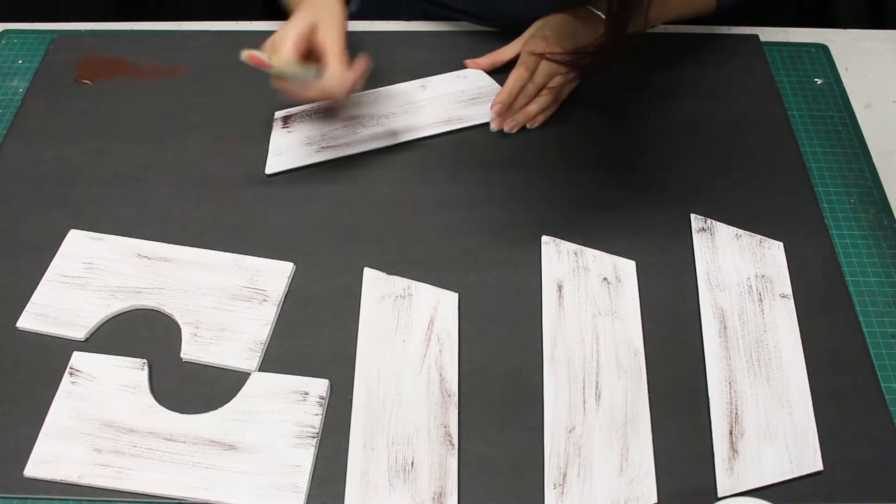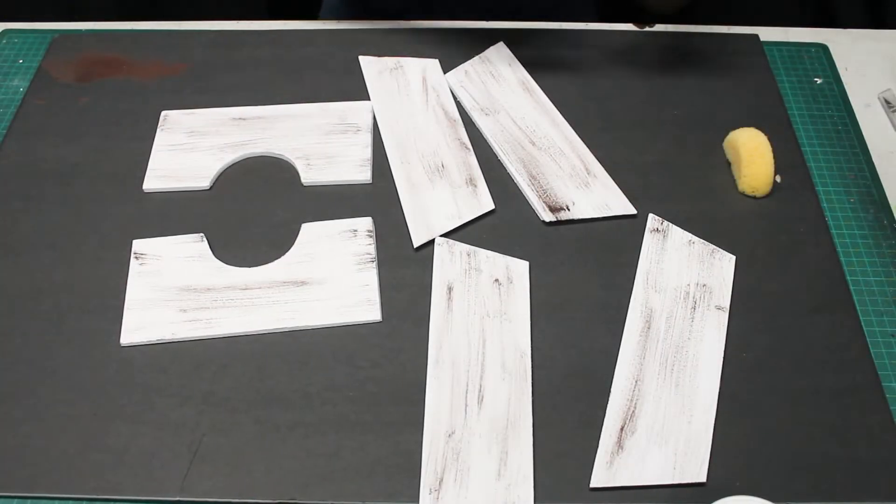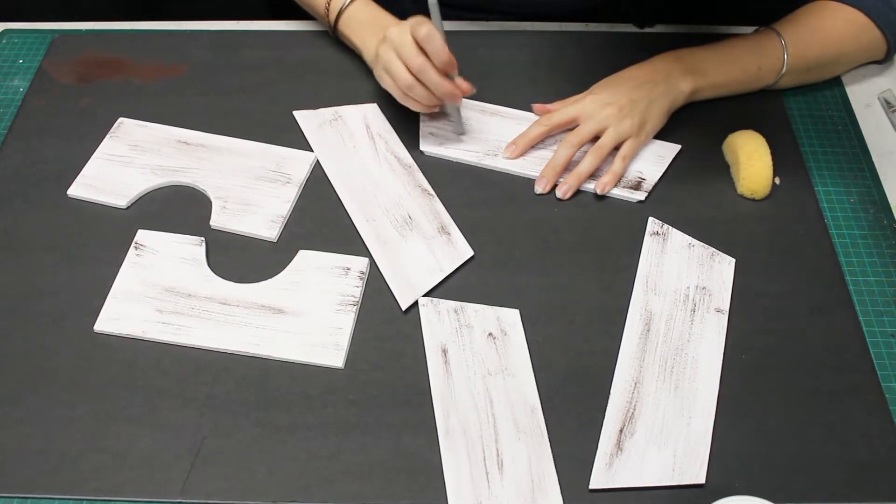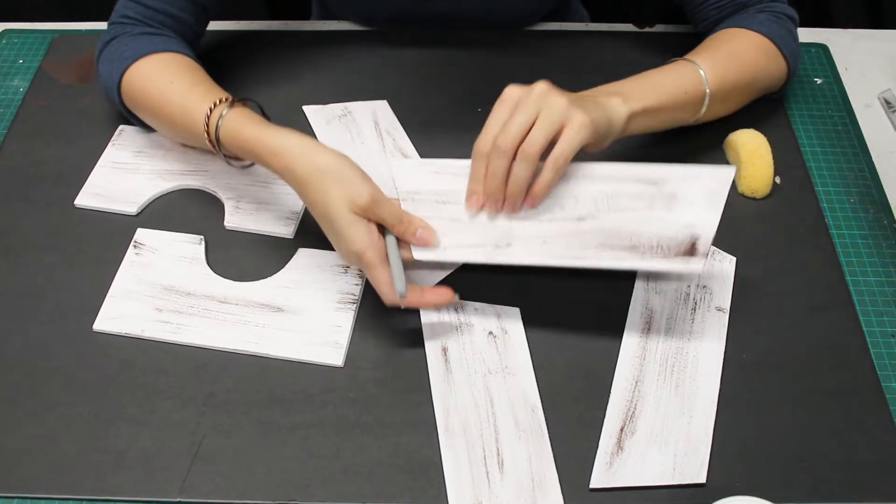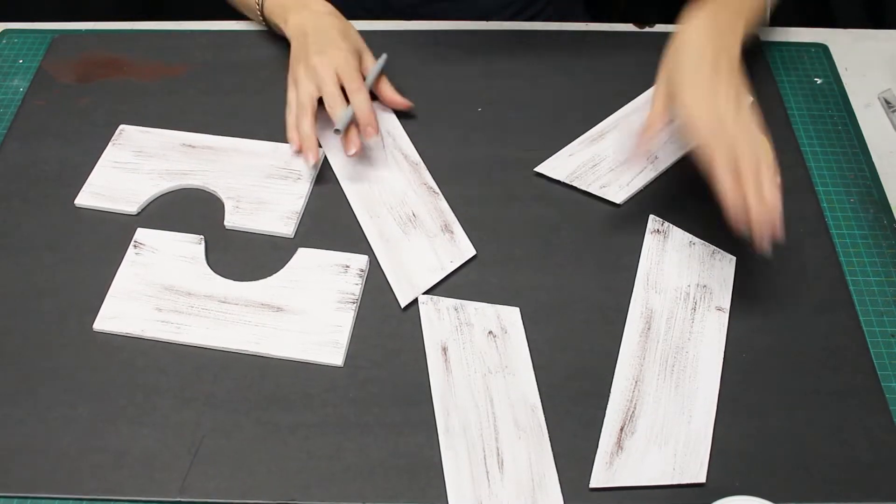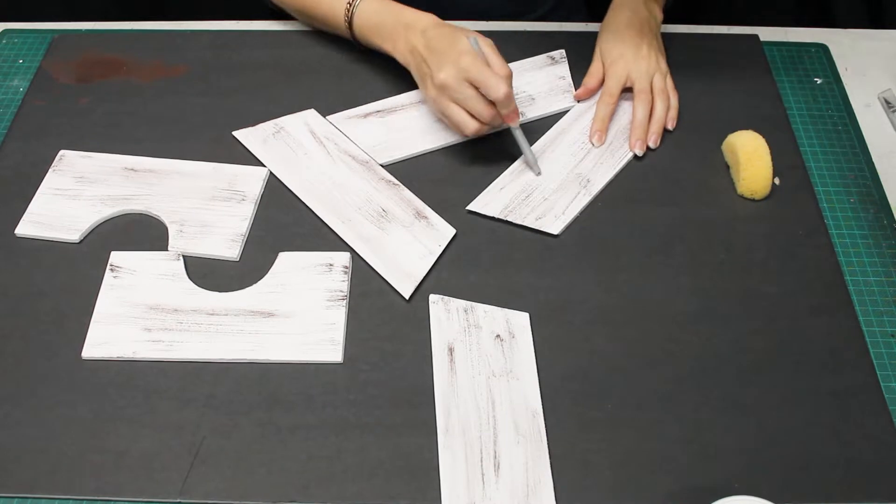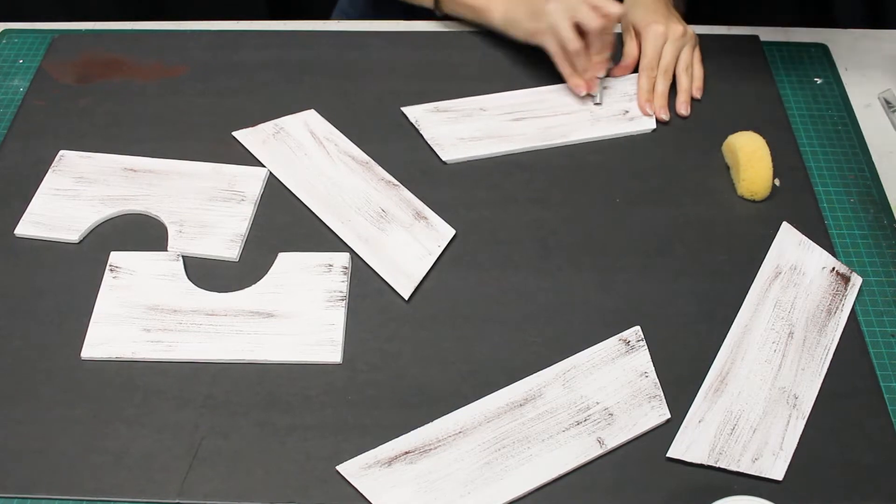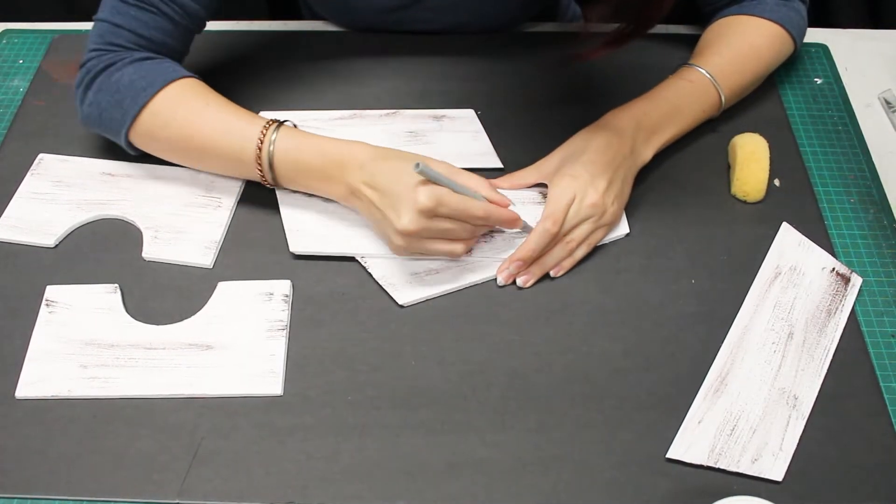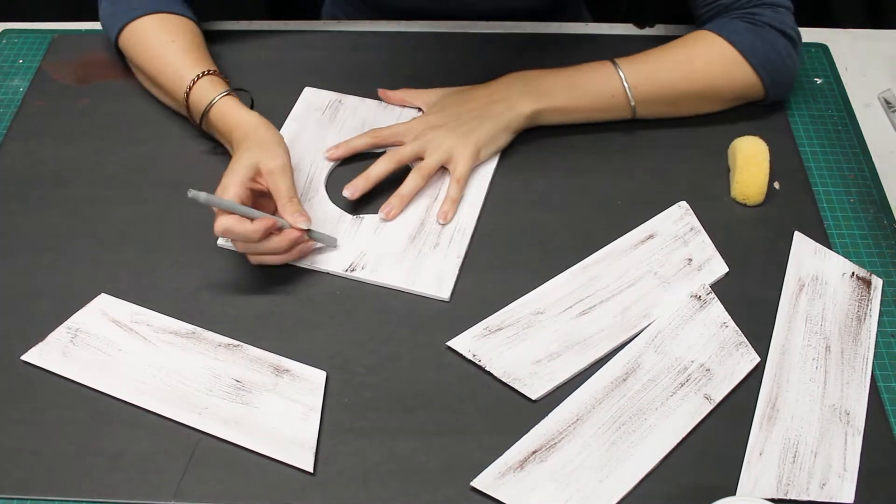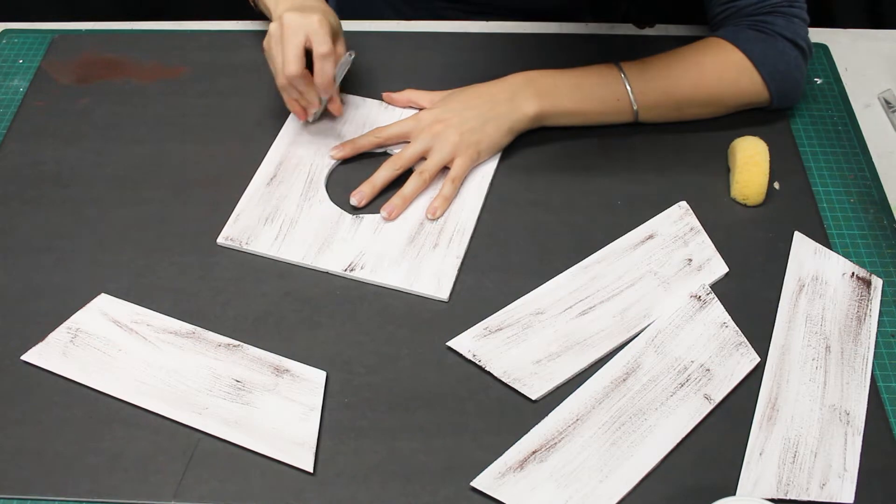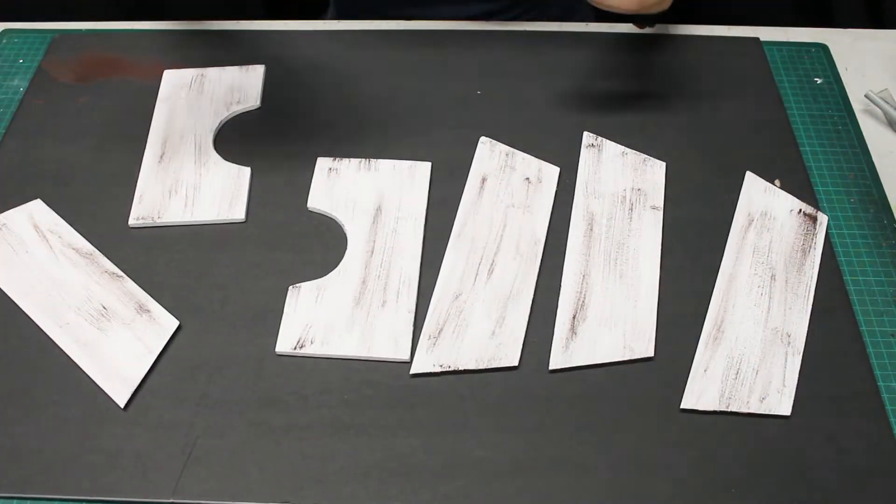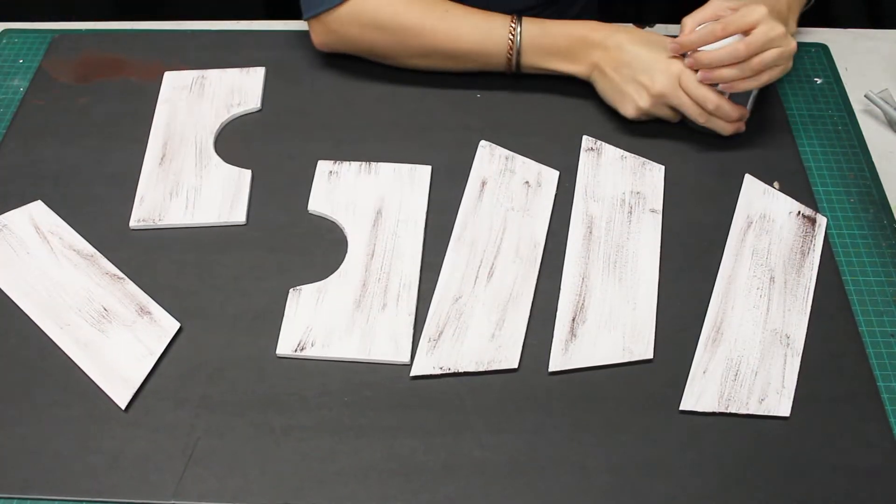Let those dry before moving on. To create some interesting distressing, I'm going to use the outside casing of a pen. You can use whatever you have laying around. Once again, check the links for a more detailed tutorial on how to create a faux wood look.